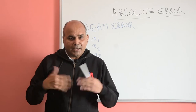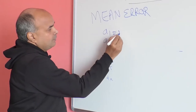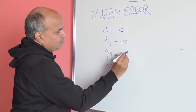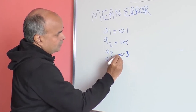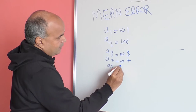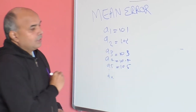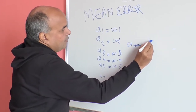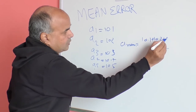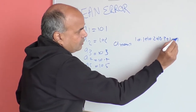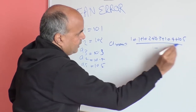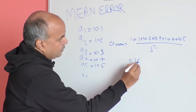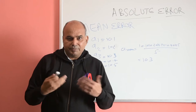Let us take an actual example. Say a1 = 10.1, a2 = 10.2, a3 = 10.3, a4 = 10.4, and a5 = 10.5. Then a_mean = (10.1 + 10.2 + 10.3 + 10.4 + 10.5) / 5 = 10.3. This is how we calculate the mean value.